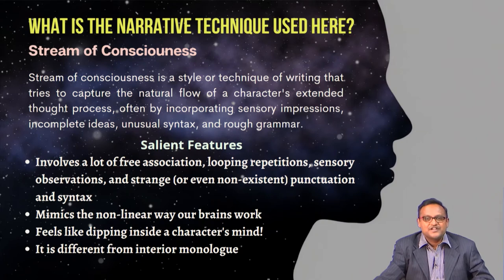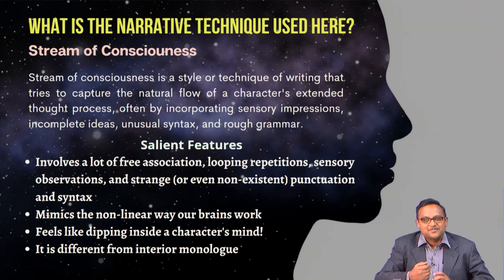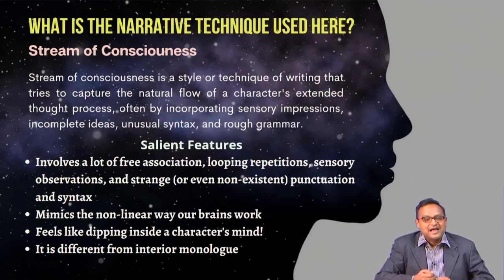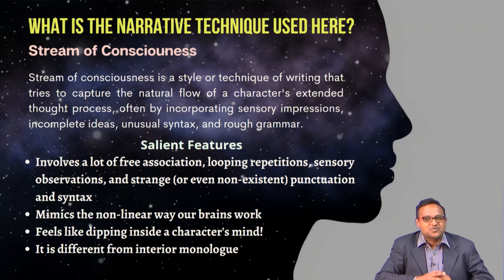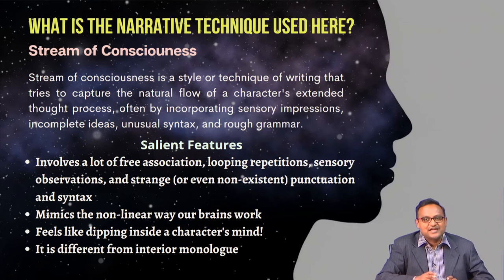Stream of consciousness is a remarkable modernist literary technique. It is not that writers before did not use it, but it came to be popularized especially in the 1920s by James Joyce in his seminal book Ulysses. Later, most modernist writers picked up this strategy to delineate the non-linear, incoherent mental action that happens in all of us. Some salient features include free association — ideas jump from one to the other — looping repetition, dense sensory observations, and unconventional punctuation.